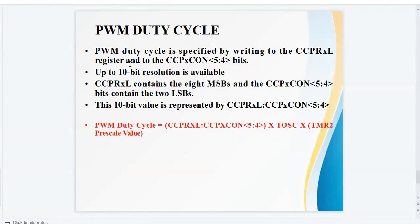PWM duty cycle: PWM duty cycle is specified by writing to the CCPR lower byte register and to the CCPCON bits. PWM duty cycle equals CCPR lower byte to CCPCON bits multiplied by TOSC into timer 2 pre-scale value.